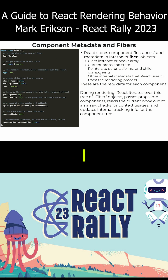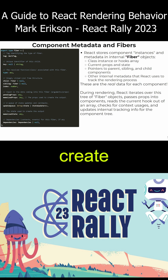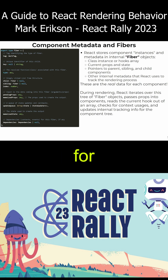So if I render a to-do list component with 10 to-do list item components inside, React is going to create 11 of these fiber objects, one for each component instance.